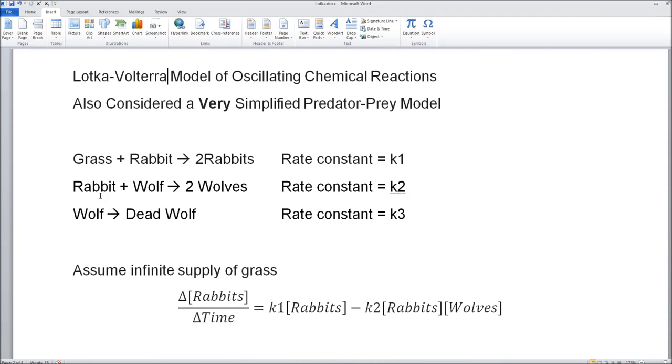And then the rabbit and the wolf interact and the rabbit is eaten by the wolf, and one wolf becomes two wolves. The rate constant for that is k2. The wolf eventually dies. The rate constant for that is k3.